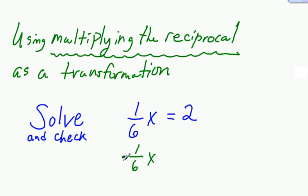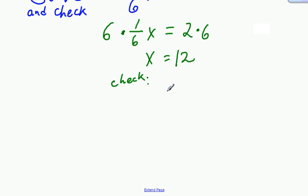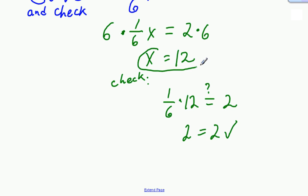We need to do this when you have a number multiplied by the x, as opposed to those first two problems where we had an addition and subtraction relationship with the variable. On the other side, we also need to balance it by multiplying by 6, and I get x equals 12. Checking: 1 sixth times 12 — does that equal 2? It indeed does. So 12 is the correct solution.